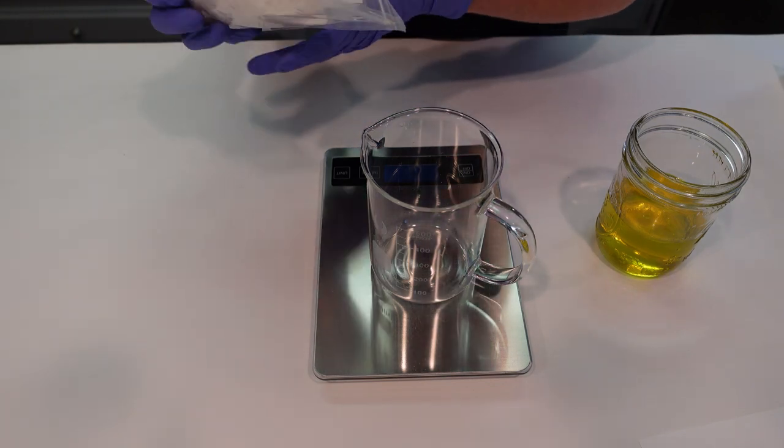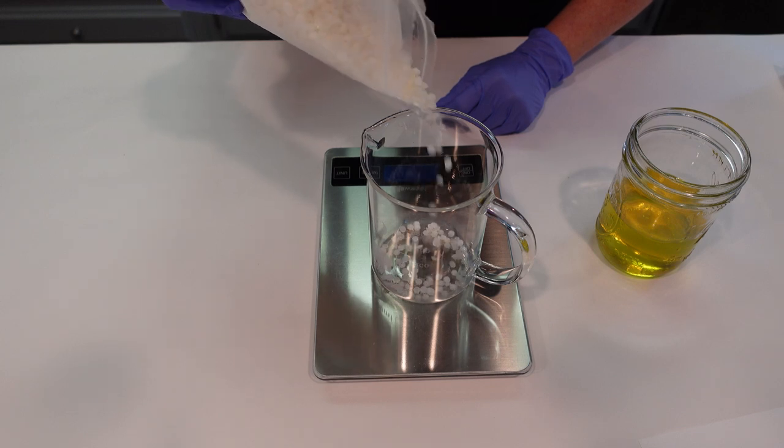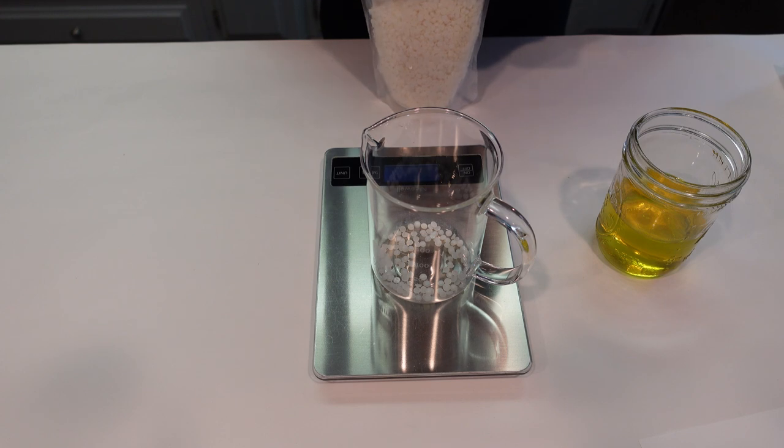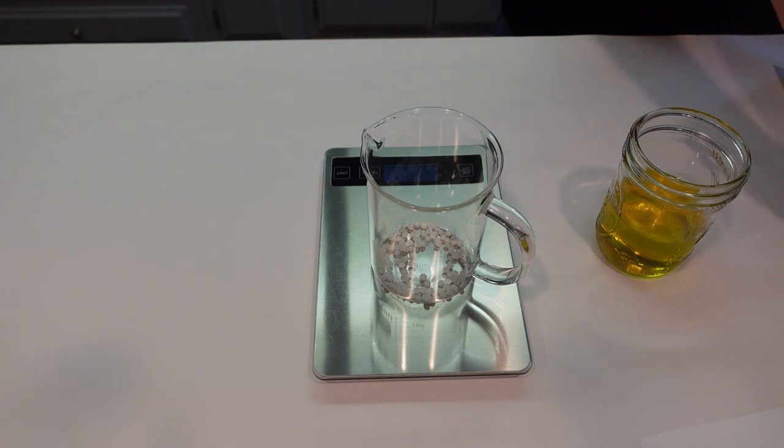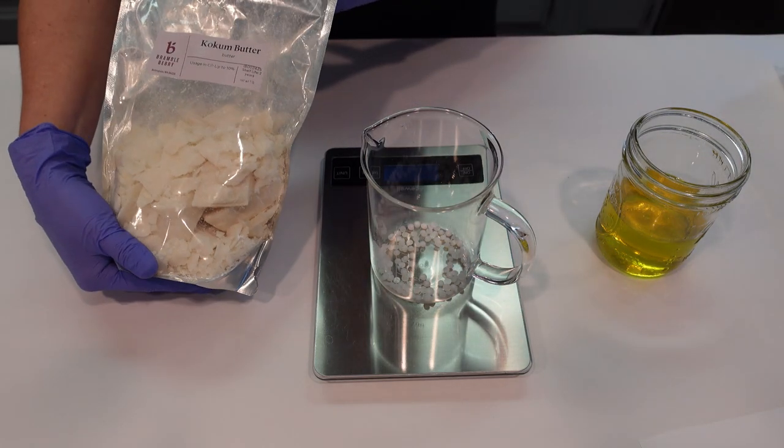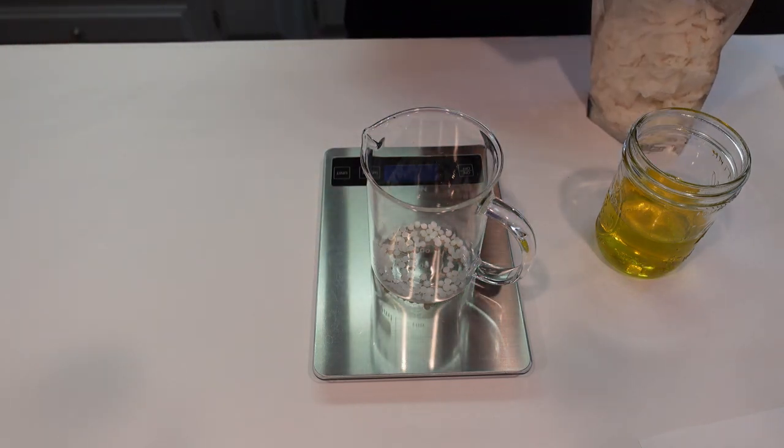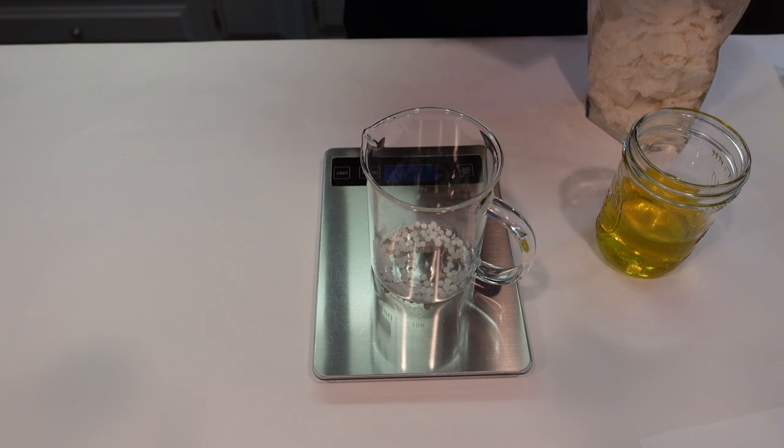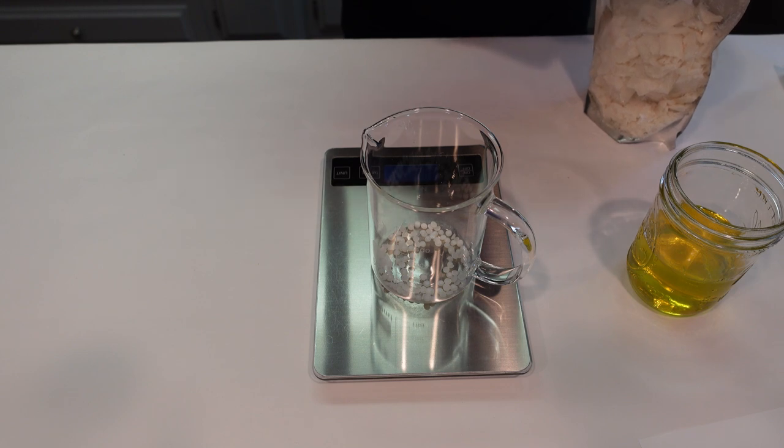The next ingredient we're going to be weighing off is the coconut butter. We're using coconut butter in this formula. Coconut butter is really known for its hydrating properties. This butter is made from the seeds of a fruit called kokum, and it's very similar to shea butter and cocoa butter, but it's a little bit better. It's higher end, it's really packed with essential fatty acids and said to help slow down aging.